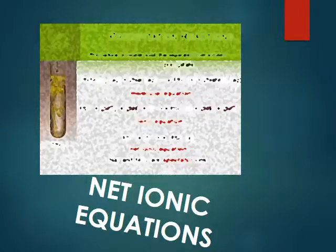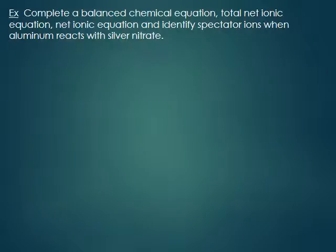We are going to take another look at a net ionic equation here. For this one, we're going to do a chemical reaction between aluminum and silver nitrate.